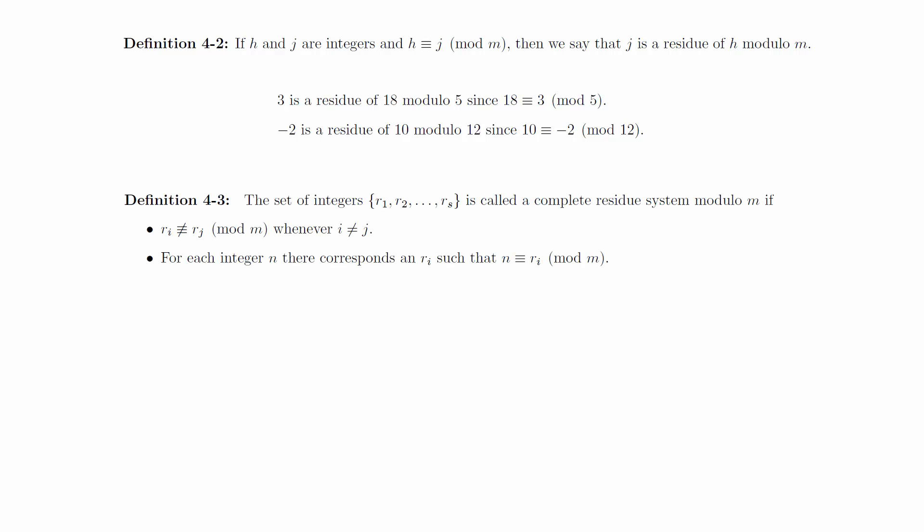The set of integers r1, r2 up to rs is called a complete residue system modulo m if ri is not congruent to rj mod m whenever i is not equal to j, and for each integer n there corresponds an r sub i such that n is equivalent to r sub i mod m.